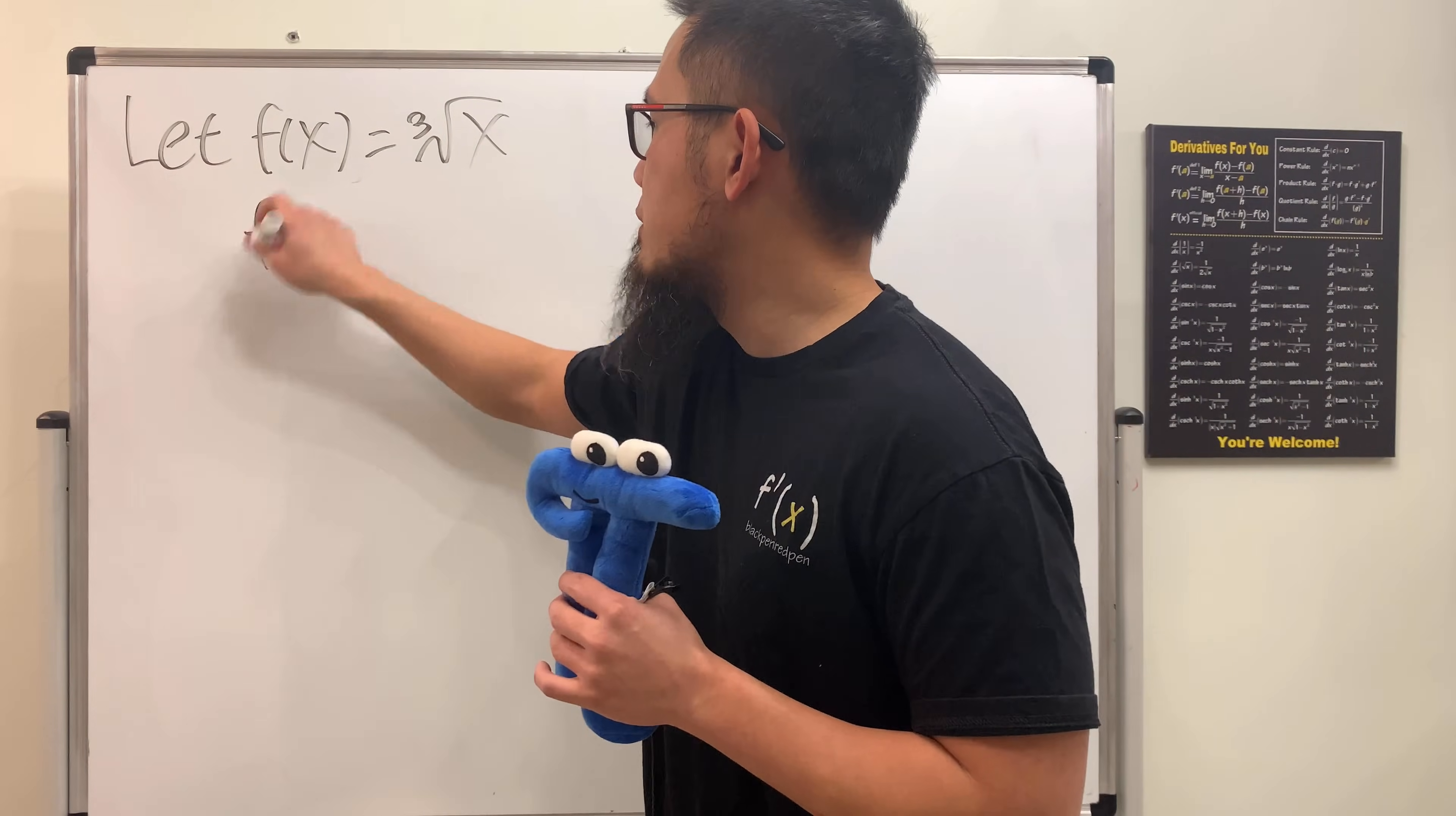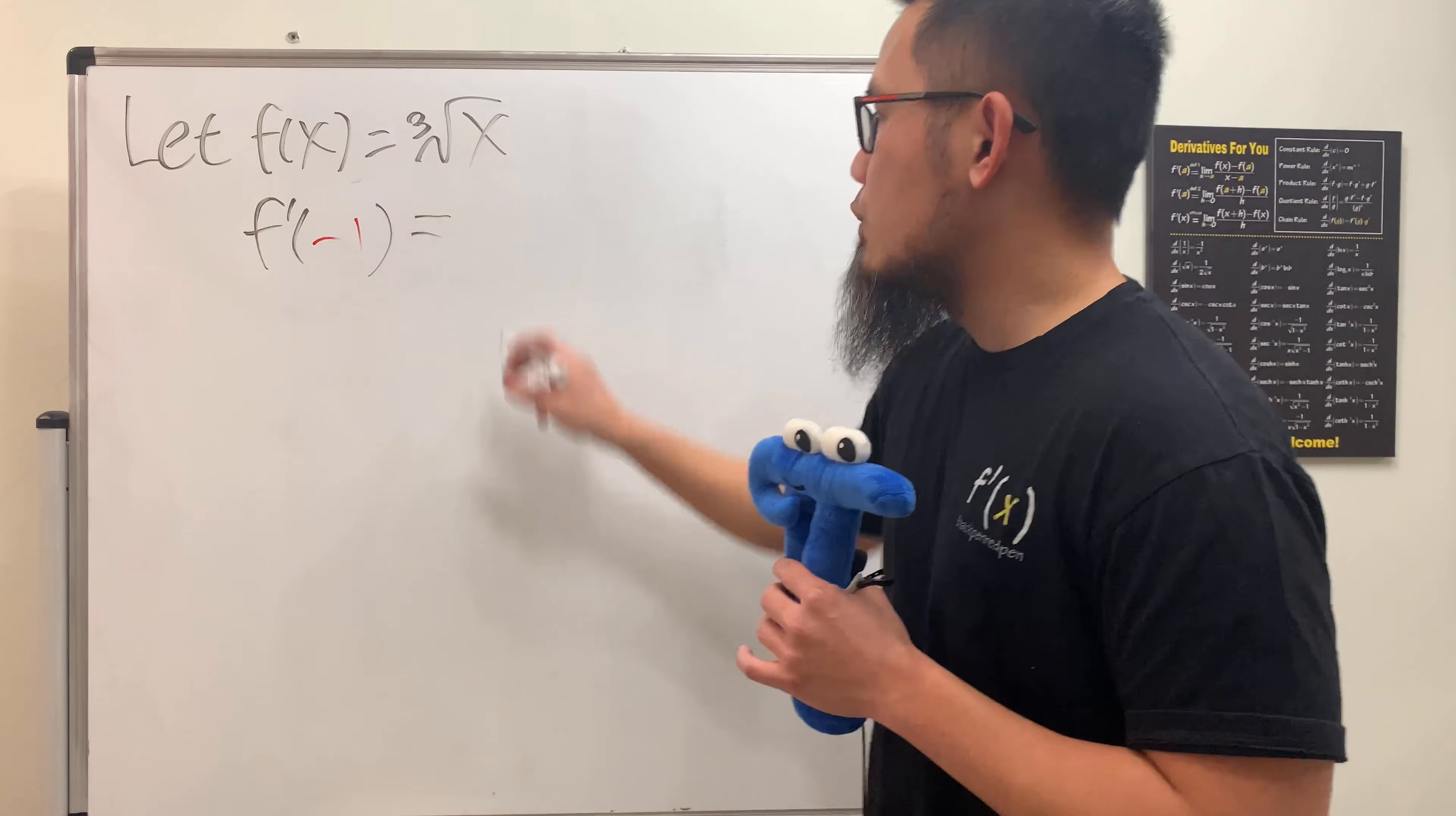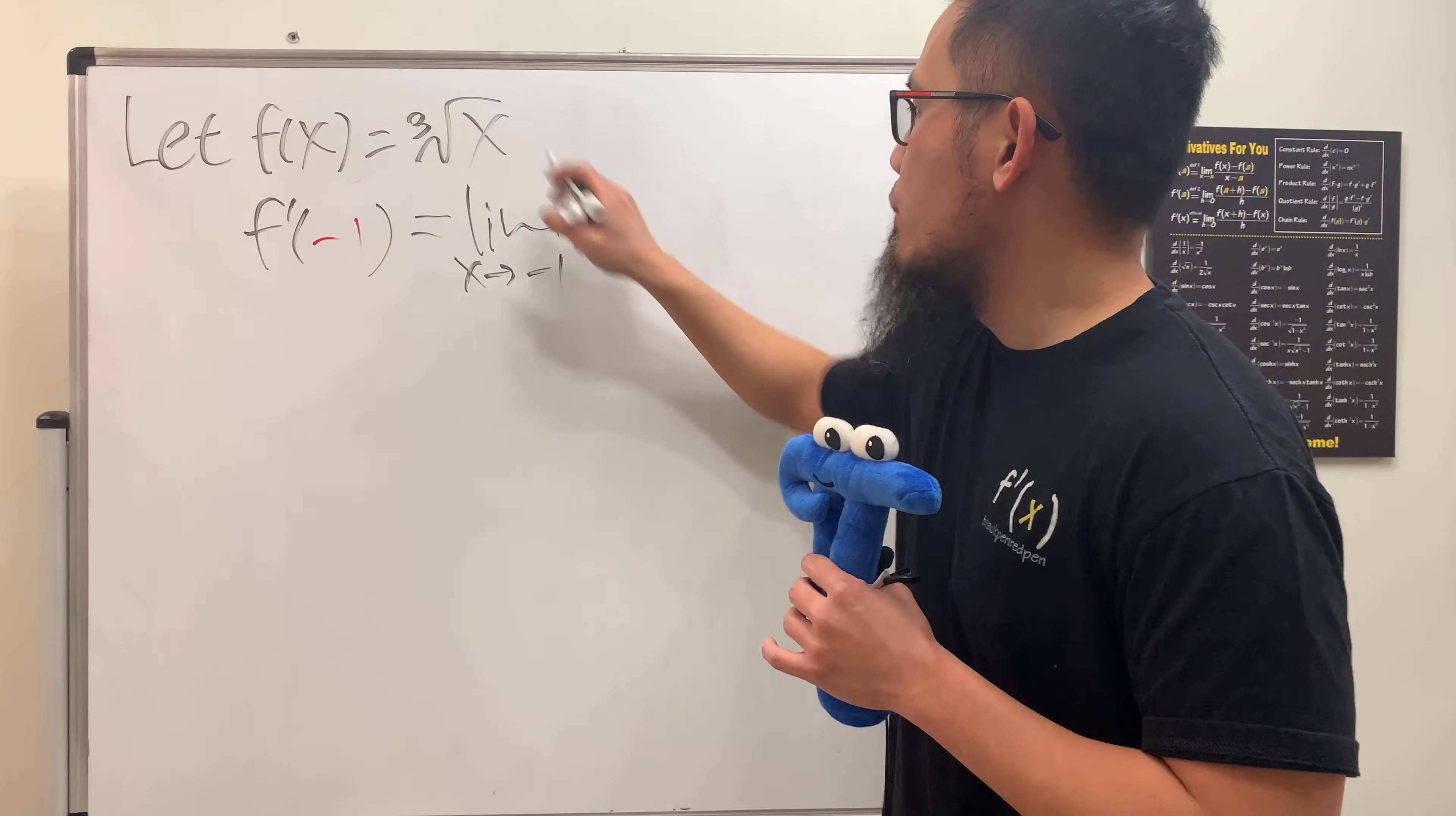So you really have no choice. You have to use the definition of derivative. f' of negative 1 is equal to the limit, and we can just do this version, x is approaching negative 1, and then we would just put on a function,